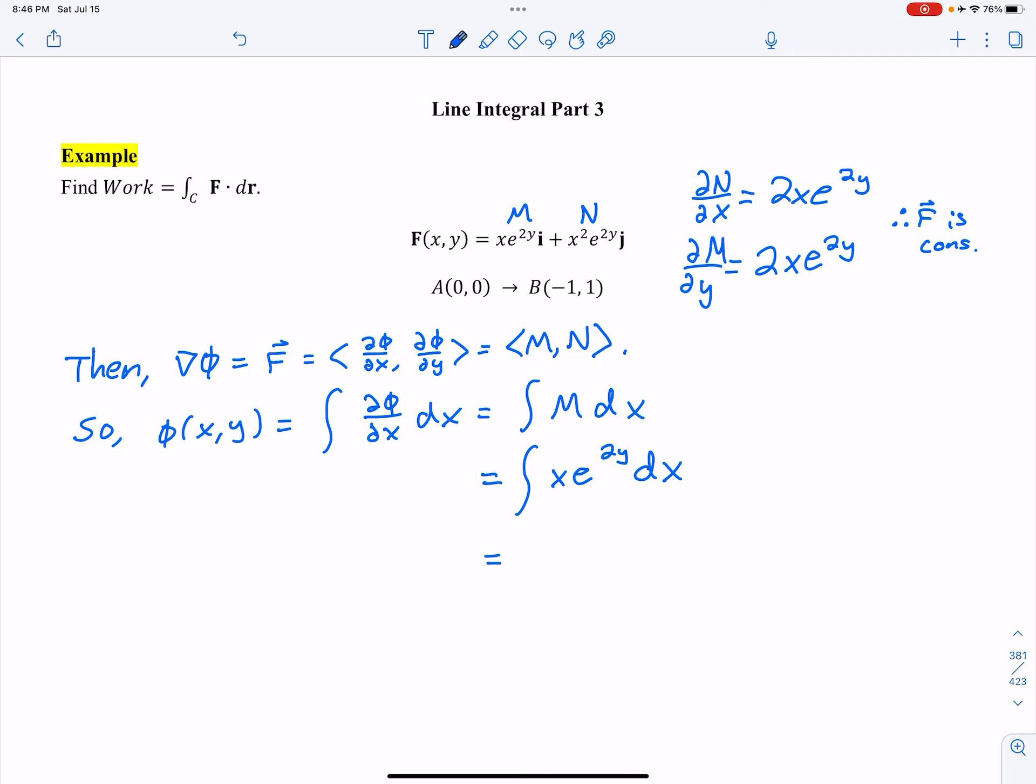And then we're going to take this integral, 1 half X squared, E to the 2Y, plus, and then we have an H of Y, because we could have had a Y constant in our phi. Taking the derivative with respect to X would have sent us there.